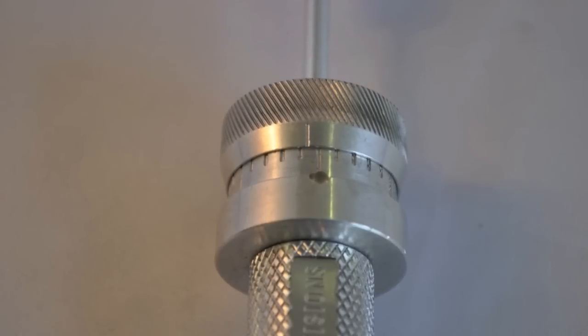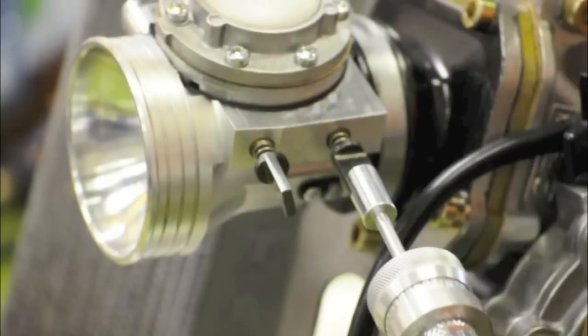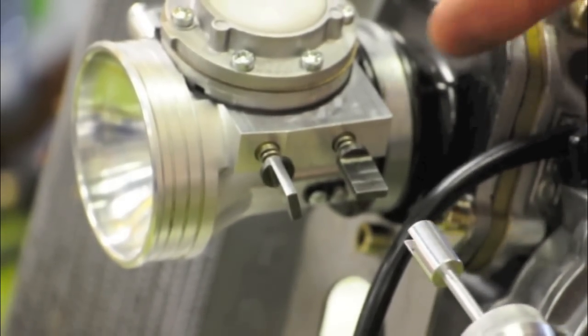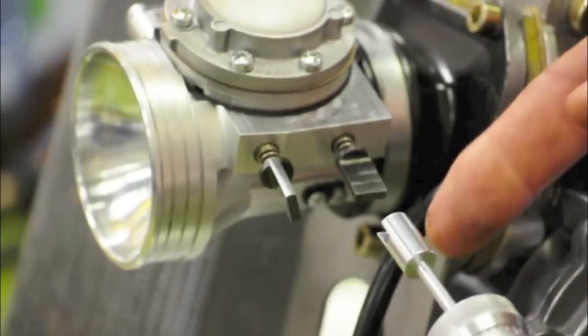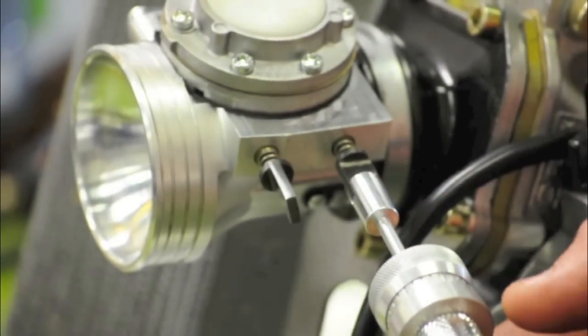Each notch on the measuring collar is equal to two minutes. You can use the quickjet to identify your current needle setting by placing the slot head onto the carburetor needle. Make sure the line on the guide collar is lined up with the zero mark on the measuring collar.